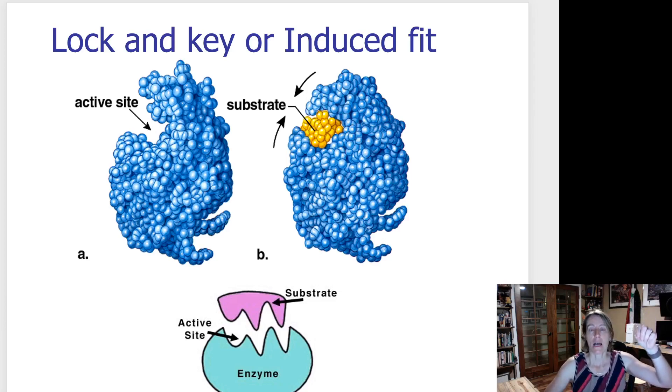If I was to hold up a glove here, a glove looks roughly like a hand - it has a thumb and four fingers and it's shaped kind of like a hand. But it's not until I put my hand into the glove that the glove actually molds itself more perfectly around my fingers. That's the idea of an induced fit.